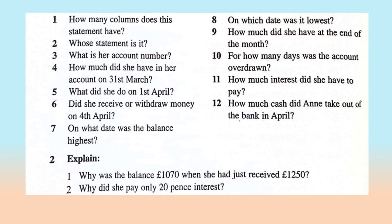We have these questions to think about: How many columns does the statement have? Revise the statement — it has date, detail, paid out, paid in, and balance — at least five columns. The account details are taken from the top of the statement. What is her account number? There is an account number written at the top of the statement. How much does she have in her account on 31 March? What did she earn on the 1st of April? Did she receive or withdraw money on the 4th of April?